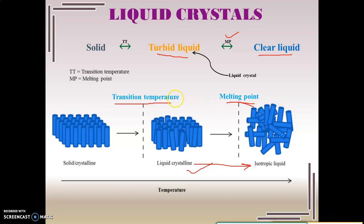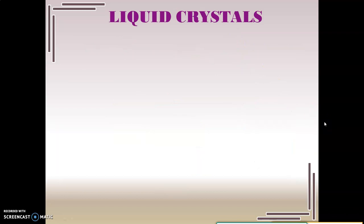So there are two temperatures. First is the transition temperature — the temperature at which a transition is taking place, a change from solid to liquid crystalline state. Moving forward, we get the melting point of the substance.